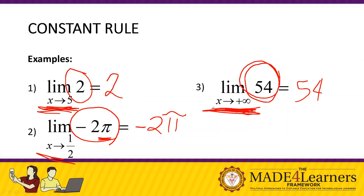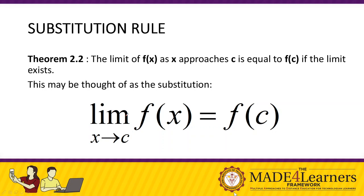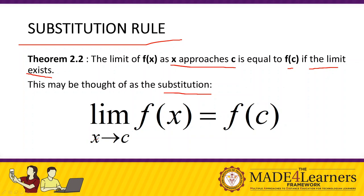From these examples you realize that no matter how x approaches a certain value, the answer will be the constant function itself. Theorem number two: the Substitution Rule. This states that the limit of f(x) as x approaches c equals f(c), as long as the limit exists. This is a very powerful theorem because we don't need to create a table of values to find the limit — we just need to use substitution.